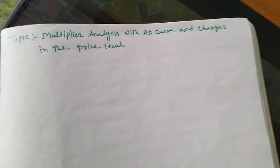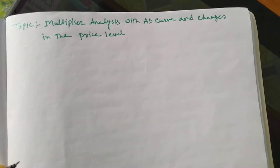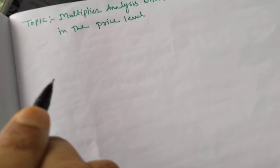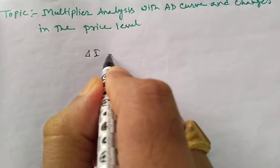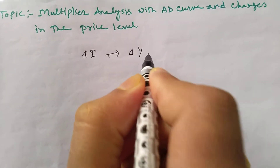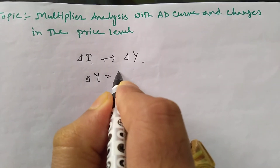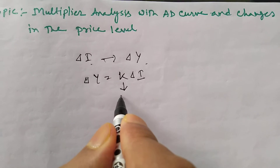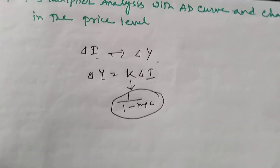Today we will discuss the topic: multiplier analysis with the AD curve and changes in the price level. The simple multiplier analysis — the investment multiplier — shows that changes in autonomous investment lead to changes in income. This multiplier K is written as 1 divided by (1 minus MPC), and is called the investment multiplier.